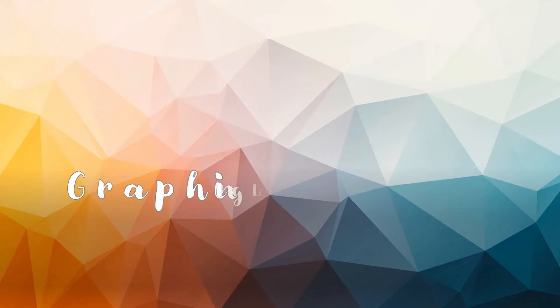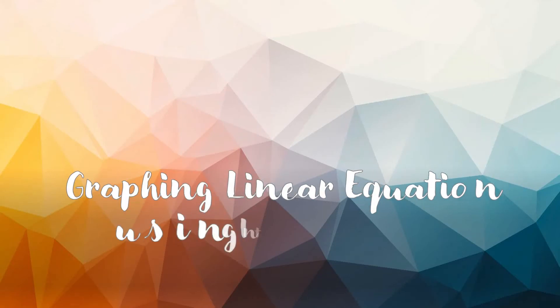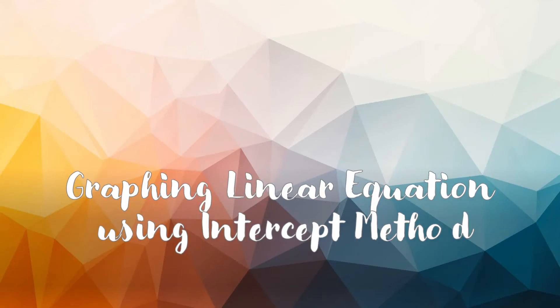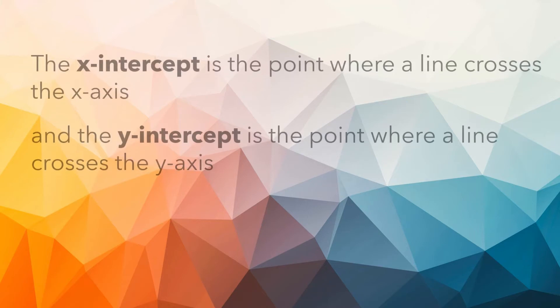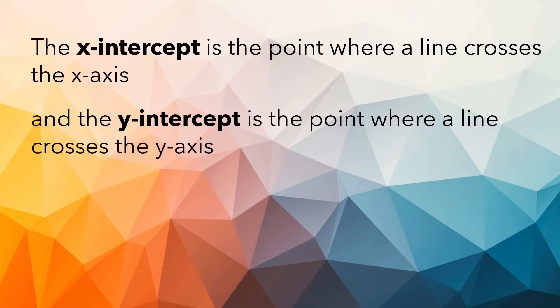In this lesson, we will discuss graphing linear equations using the intercept method. When we use the intercept method, we are looking for the x and y-intercept of the given equation. The x-intercept is the point where a line crosses the x-axis, and the y-intercept is the point where a line crosses the y-axis.